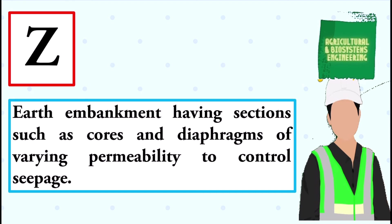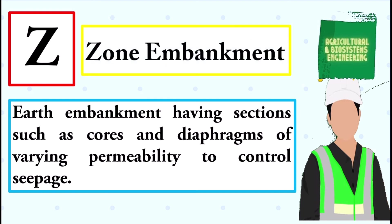Earth embankment having sections such as cores and diaphragms of varying permeability to control seepage. The answer is zone embankment.